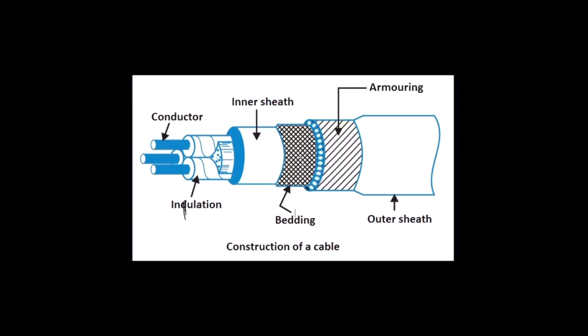This bedding is to prevent corrosion of inner sheath and around bedding there is a layer and there is armoring. Armoring is to protect cable from mechanical damages. It protects the cable from mechanical damages and the outer layer is called outer sheath.